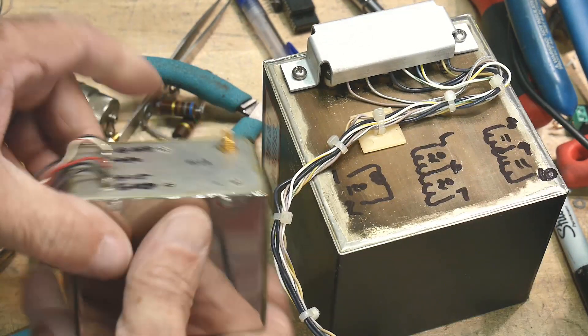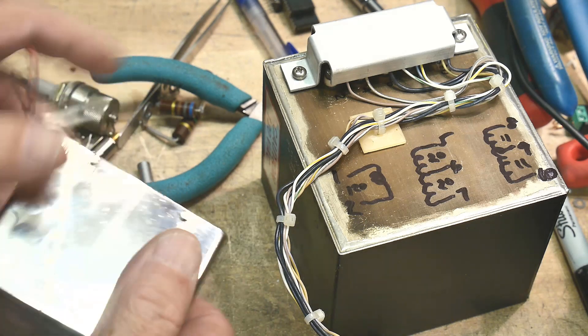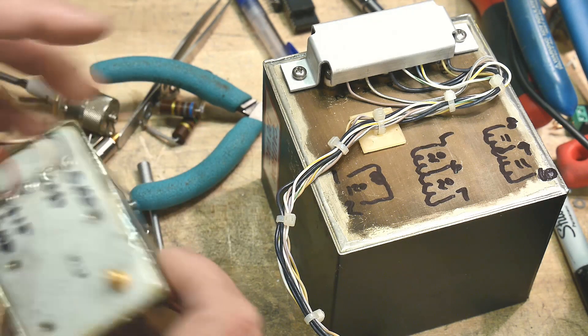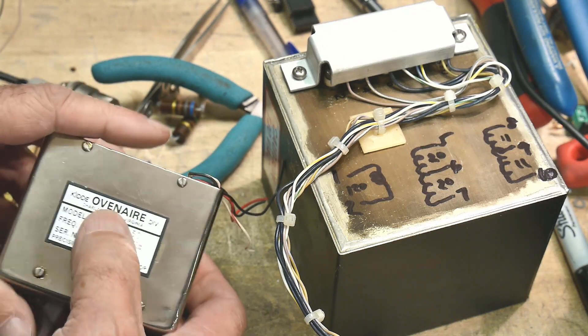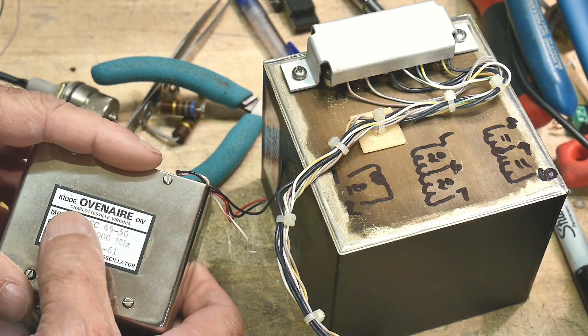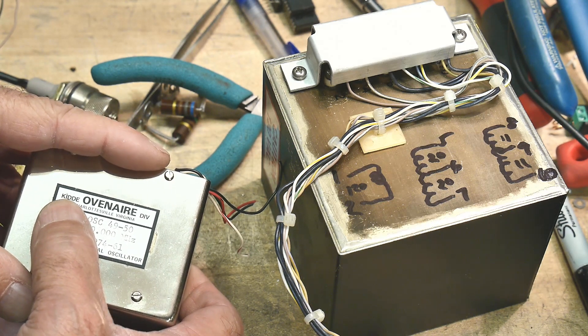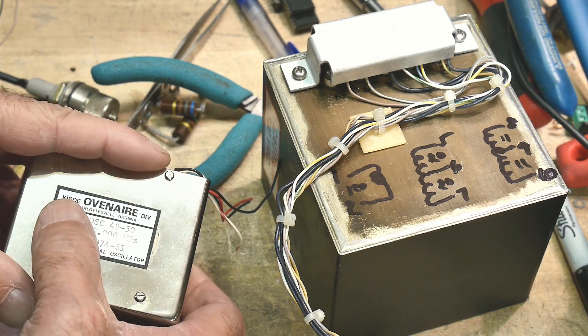This is a beauty. I pulled out the master oscillator. This is the master oscillator, coarse and fine adjust on it. This is by Oven-Air Division. Don't they make like air conditioners and stuff? Maybe I don't know.